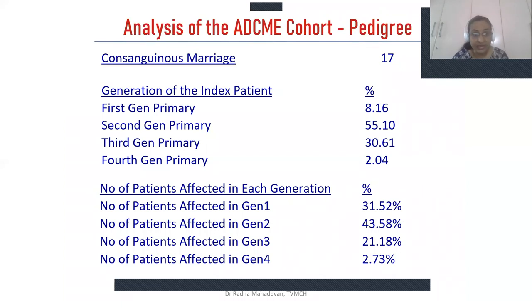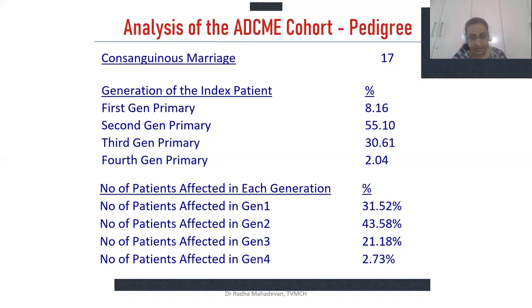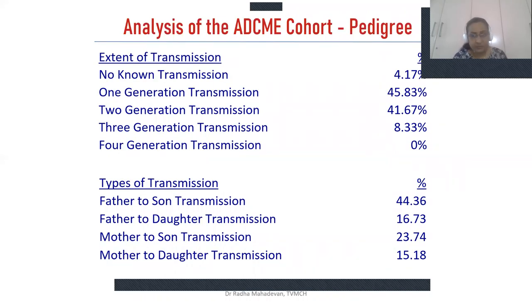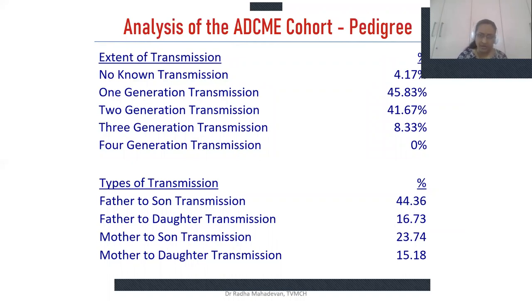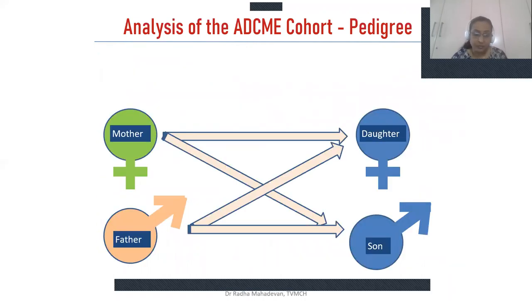Pedigree analysis showed 17 families with consanguineous marriages. The generation of the index patient was predominantly second generation, with third generation also present. Persons affected per generation: generation 1 was 31.52%, generation 2 was maximally affected at 44%, generation 3 was 21%, and generation 4 was 2.73%. Regarding transmission: no known transmission starting from the first pedigree was 4.17%; one-generation transmission was 45%; two-generation transmission was 41%; three-generation transmission was 8.33%. Father-to-son, father-to-daughter, mother-to-son, and mother-to-daughter transmission patterns were all observed.